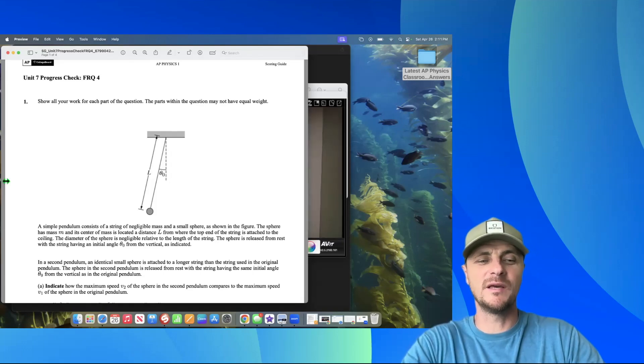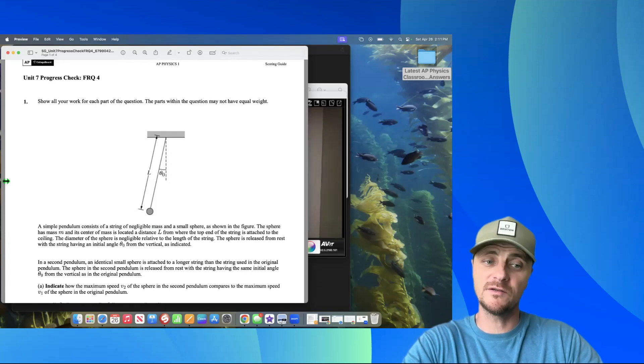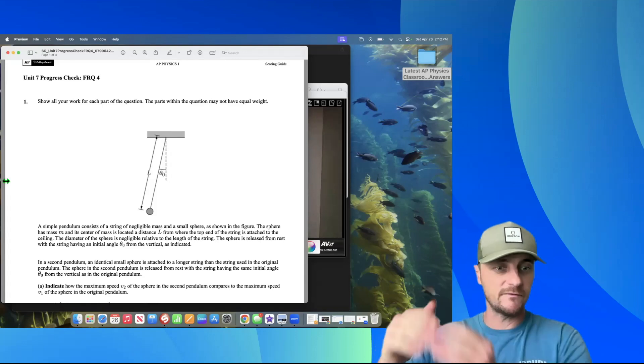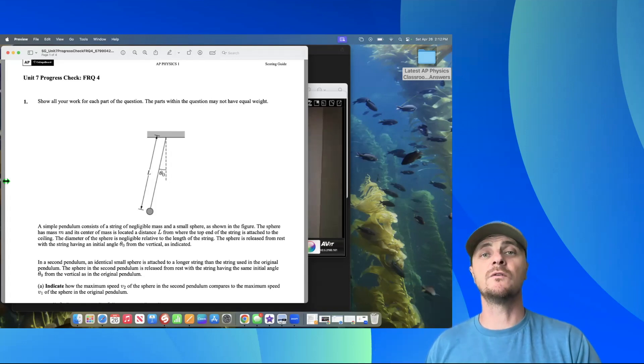In a second pendulum, an identical small sphere is attached to a longer string than the string used in the original pendulum. The sphere in the second pendulum is released from rest with the string having the same initial angle theta naught from the vertical as in the original pendulum. Part a: Indicate how the maximum speed v2 of the sphere in the second pendulum compares to the maximum speed v1 of the sphere in the original pendulum.